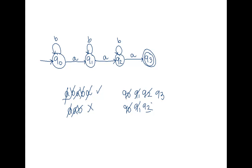Let's try one more: AAABA. This has four A's, so it should reject. We're in Q0 to start. I read an A, I move to Q1. I read an A, I move to Q2. I read an A, I move to Q3. I read a B — can I read a B? Well, right now no. I have no transitions that I can take on reading a B. This is because our machine wasn't finished yet. We did not have exactly one transition out of every state for every input symbol. Q3 has no transitions out of Q3 on either B or A.